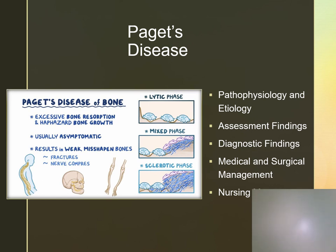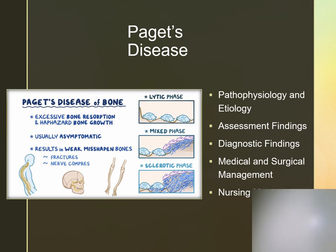Paget's disease is an abnormal bone remodeling. It's most common in the long bones, the spine, the pelvis, and the skull. The cause is unknown. Complications will include a pathologic fracture, paralysis, and cranial nerve damage. These clients will have asymptomatic presentations, but may have bone pain, tenderness, and skeletal deformities. We diagnose with x-rays and bone scans. We treat with drug therapy and surgery. Nurses need to assist with ADLs and ensure client safety.